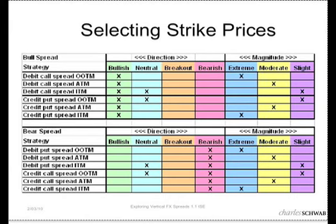If I'm just moderately bullish, I would use an at-the-money spread, where the long leg — in the case of a debit call spread — is in the money and the short leg is slightly out of the money. In other words, the index falls in between the two strike prices at the time the trade is established, and with a moderate upside movement I'll make a moderate profit. If I'm neutral to just slightly bullish, I would use an in-the-money debit call spread, where both legs are already in the money. Even though we call it a bullish spread, it's actually a 'not bearish' spread — the index doesn't necessarily have to go higher, it just has to not go lower.